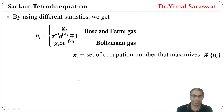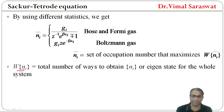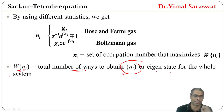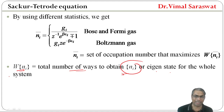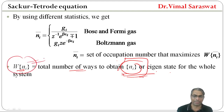Here N-bar-i is the set of occupation numbers that maximizes W(Ni), the total number of ways to obtain an eigenstate for the whole system. The total number of ways is given by this relation.